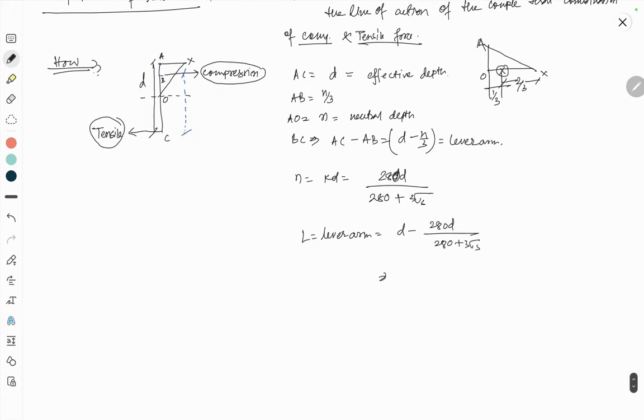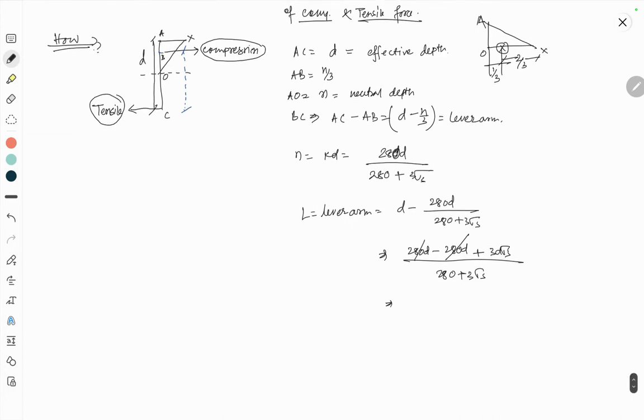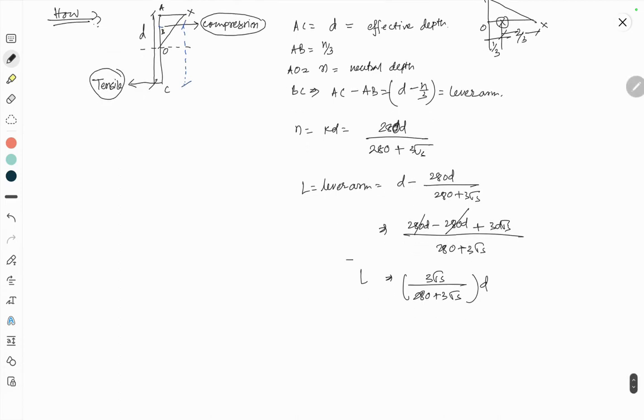And interestingly, if I am simplifying this, so 280D minus 280D plus 3D sigma S by 280 plus 3 sigma S. 280D cancels, so we get 3D sigma S by 280 plus 3 sigma S. So yeah, this is your lever arm.